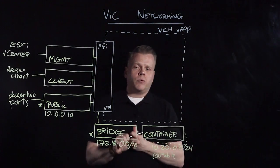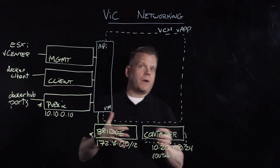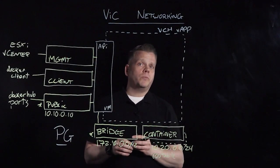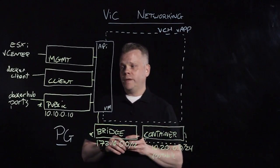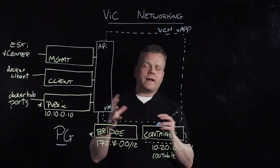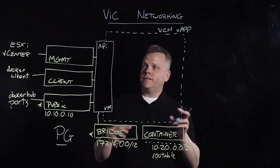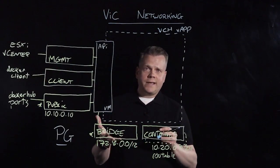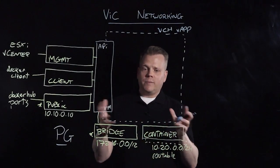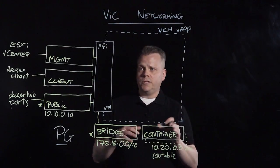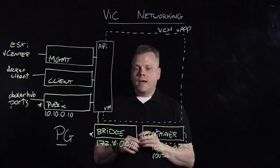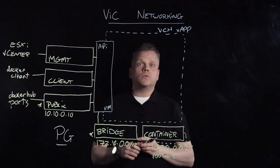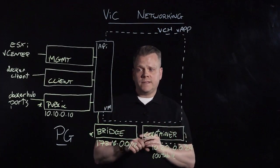One important thing to realize is that each of these networks is backed by a vSphere port group. This port group can be either a vNetwork Distributed Switch port group or an NSX logical switch port group. Because it's backed by an actual vSphere port group, you get increased visibility into network flows. Any network flow monitoring tool you have today, like vRealize Network Insight, will automatically apply and allow you to see all the network flows between your container VMs, container host, and the external world. This also means you can apply security policies on each of these port groups and on each individual container VM.